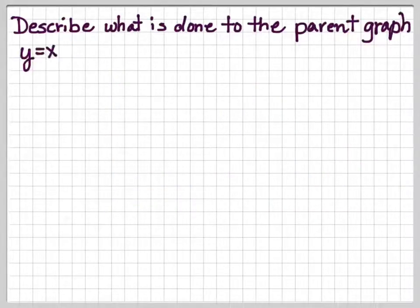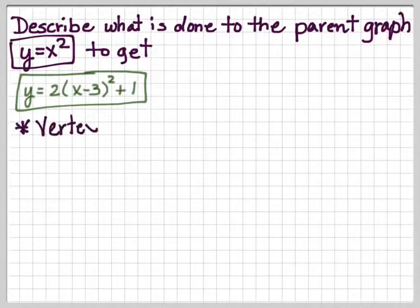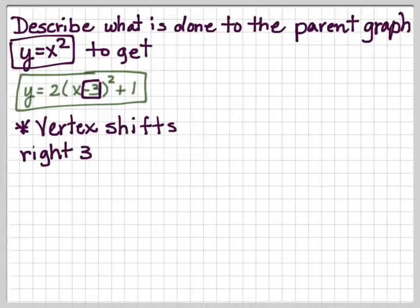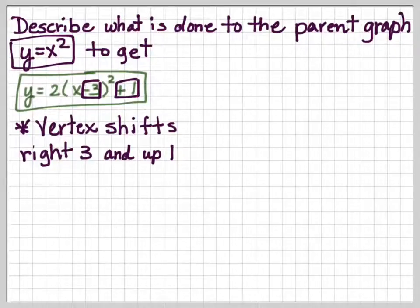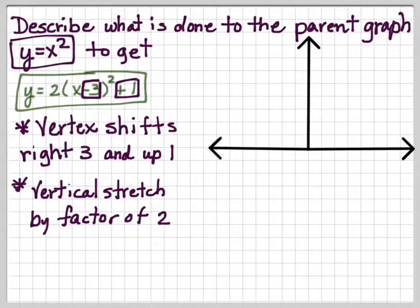Let's describe what is done to the parent graph y = x² to get y = 2(x - 3)² + 1. If we examine this, the vertex shifts right 3 and up 1. Remember, the x always seems to go backwards to what you'd think, and the y always goes direct. It's going to be a vertical stretch by a factor of 2, because we have a 2 out in front.